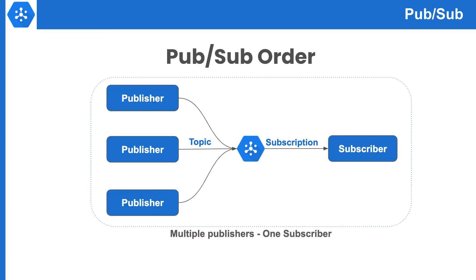Now let's increase the throughput. Here we have increased the number of publishers. Now it seems a little difficult to provide ordering because publishers are not communicating with each other, so the messaging service has to handle the ordering and that would increase the latency. We are using a single subscriber and it would also take some time to process the messages, so latency would increase further. After some time, messages would be in a backlog and the subscriber would not be able to process them at the same rate as the publishers.